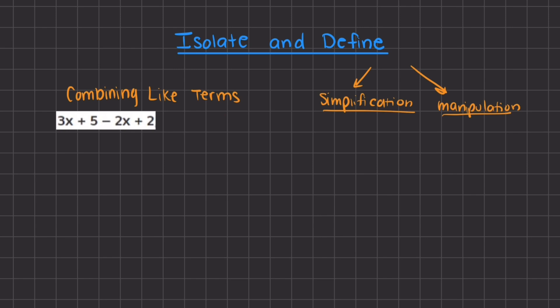The two main methods we are going to learn are simplification and manipulation. These two methods are the main methods for solving, isolating, and defining variables in our expressions.